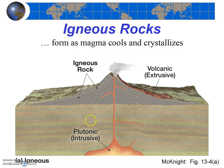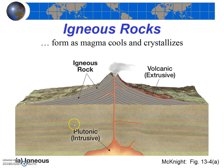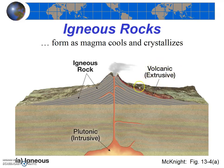There are two subtypes of igneous rocks: intrusive, or plutonic, and extrusive, or volcanic. Plutonic rocks form deep within the earth, cooling slowly. Volcanic rocks form at or near the earth's surface as lava comes out of volcanoes, and these rocks cool quickly. But again, both intrusive and extrusive rocks form as magma cools.